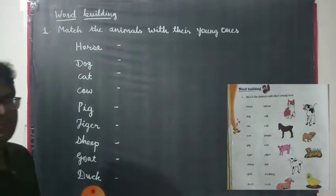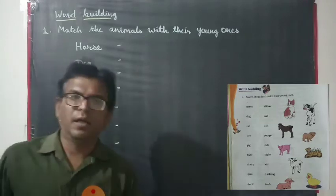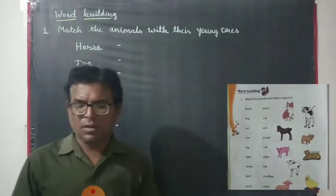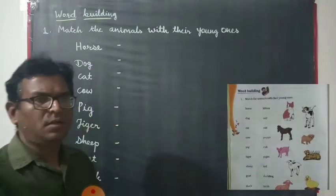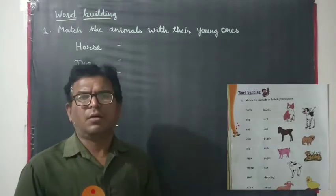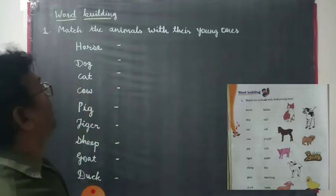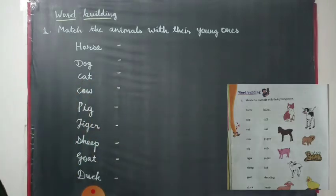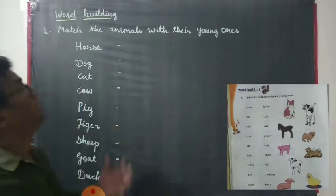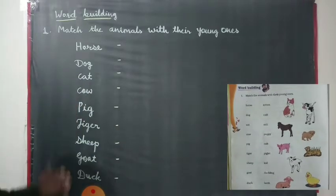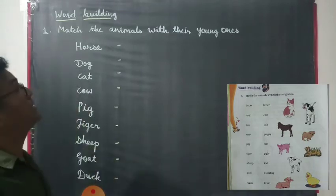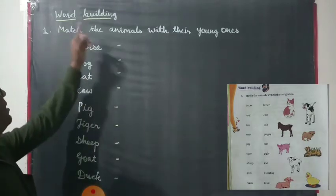Hello friends, good morning. We have already learned about the unit C1, Little Tiger, Big Tiger. From this unit, today we are going to learn about some activities from our books, like world building.